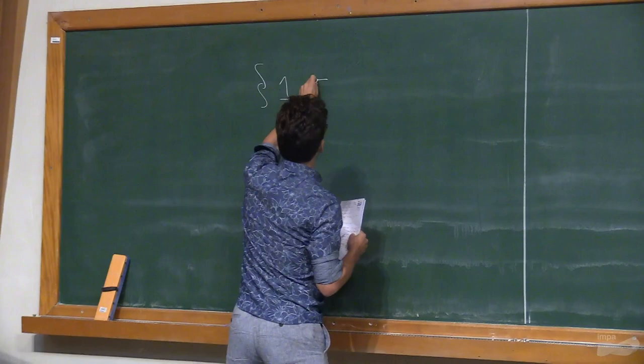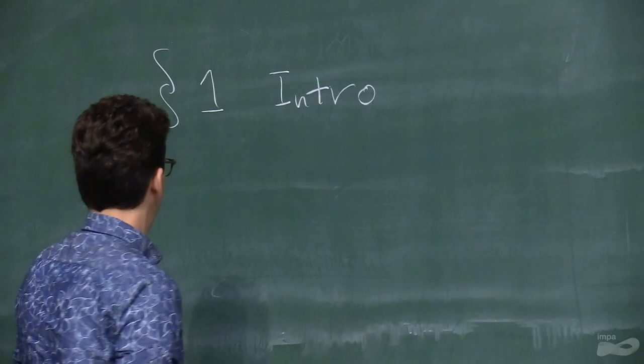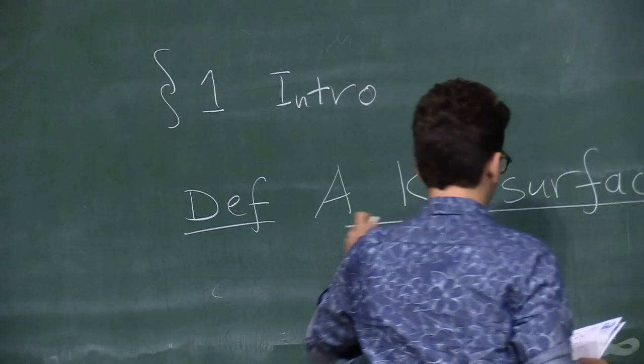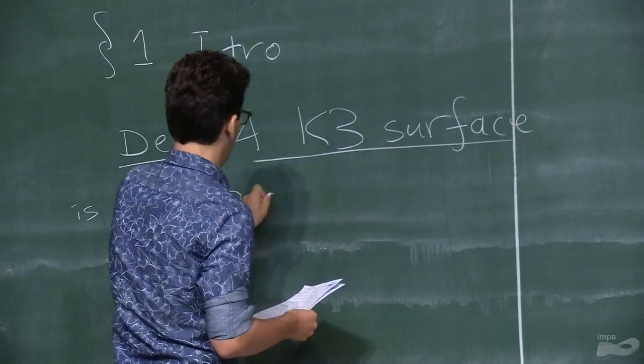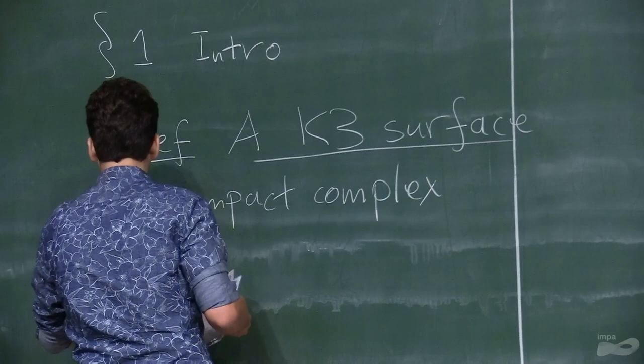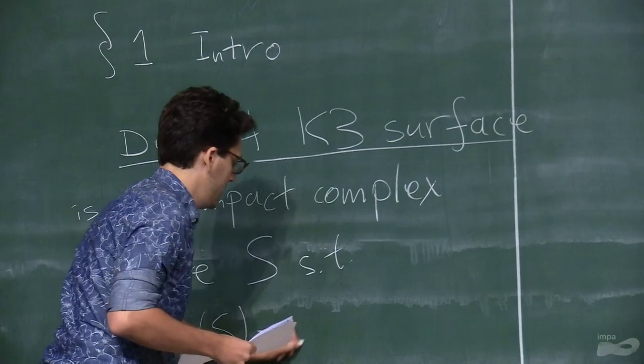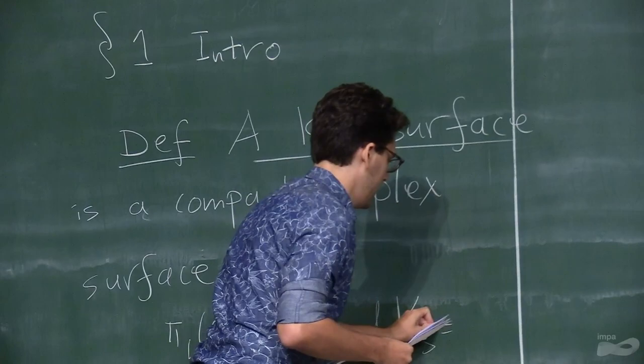First of all, what are the objects of interest? Let me give the following definition. A K3 surface is a compact complex surface S such that π₁ of S is trivial and the canonical bundle of S is the trivial bundle.